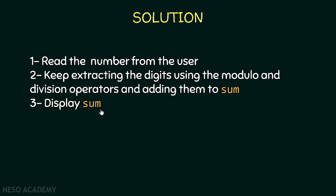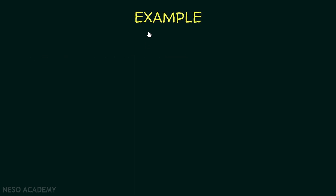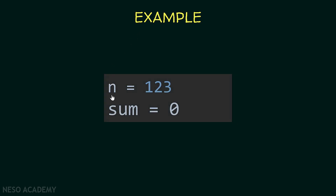So how are we going to extract the digits? Let's look at a small example. Suppose the user enters 123. This number has 3 digits. Our sum starts at 0. First, we want to extract the last digit and add it to sum. So sum will be equal to 3. To extract this digit we use the modulo operator — we add n modulo 10 to the variable sum.